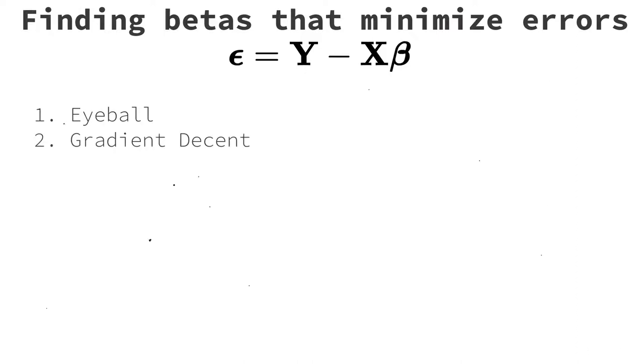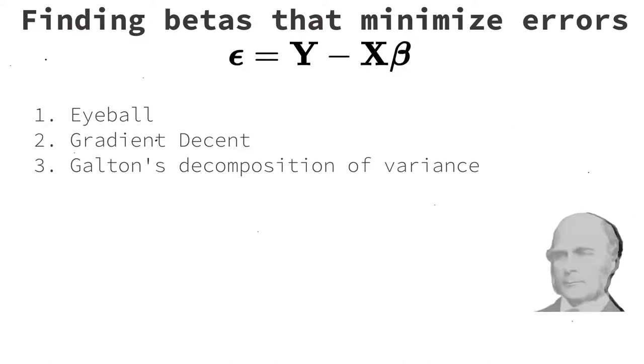1. Eyeball it and call it good. 2. Gradient descent. This means we have a computer make an initial guess and then make incremental improvements until the improvements become small. 3. Galton's decomposition of variability. Interesting fact. Galton, Darwin's cousin, was working on drawing lines to sweep key data in much the same way we are. But despite least squares being known for at least 50 years, he went about the solution in a completely different way. But that will be a topic for another time.